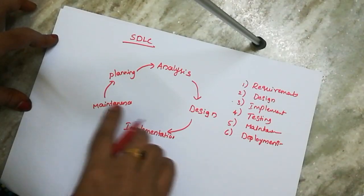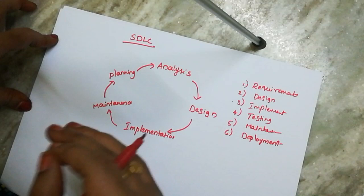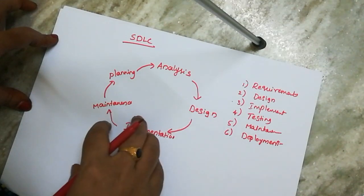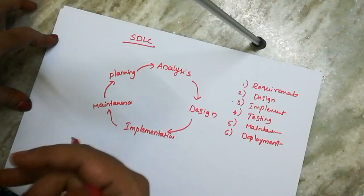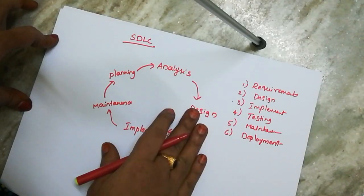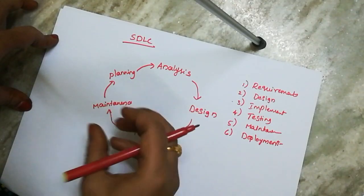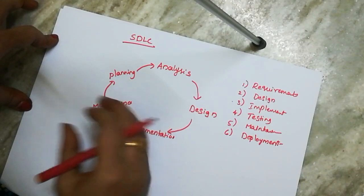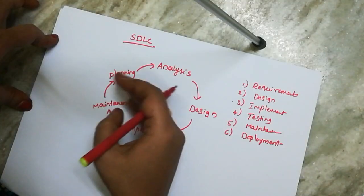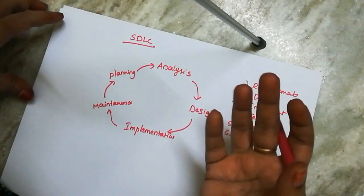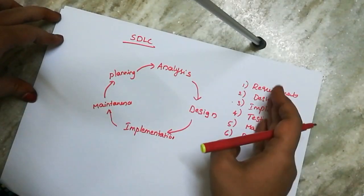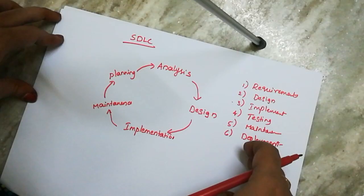After implementation, we move to maintenance — maintaining the software product. Then we combine all outputs together. After that comes planning: how to release the software product into the market. So let us review all the stages we have covered.